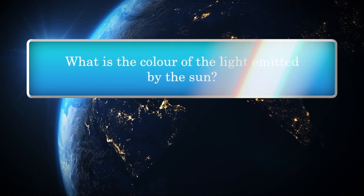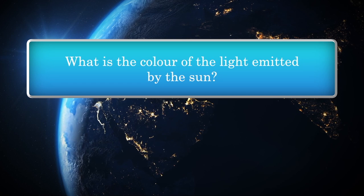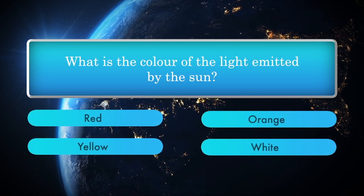What is the color of the light emitted by the sun? Options: Red, Orange, White, Yellow.